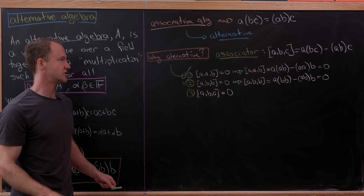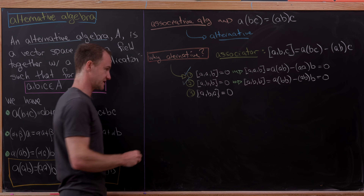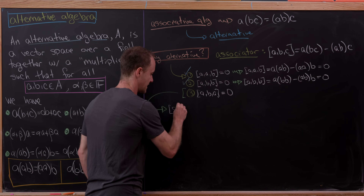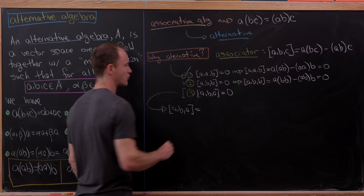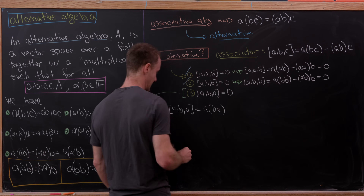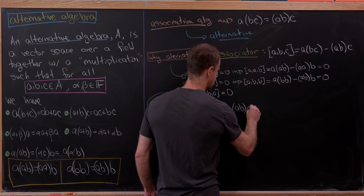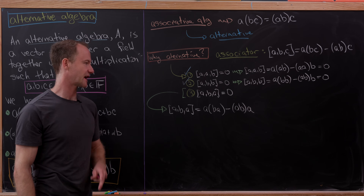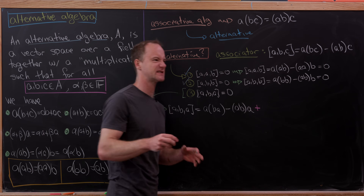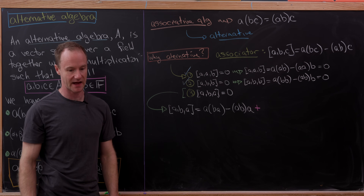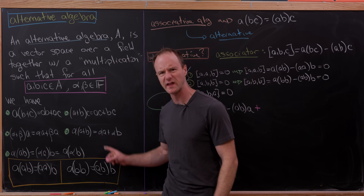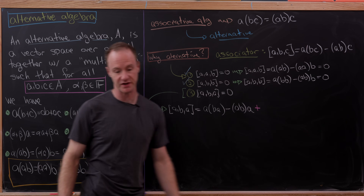So all we need to do to show that this is in fact alternating is to prove the third rule, ABA equals zero. Let's take the associator ABA and write it out: A times BA minus AB times A. Now we need a trick — we'll add zero to this, which is one of mathematicians' favorite tricks. We just have to decide what version of zero to add, and it will be built out of these alternative identities.